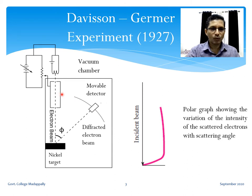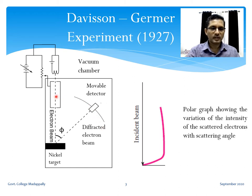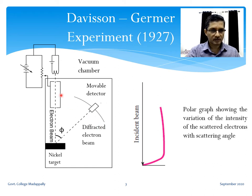When you move the detector, we can calculate φ, the angle between the incident electron beam and the scattered electron beam. When the electron detector is moved along this axis, we can calculate the number of electrons scattered at different angles — 10 degrees, 20 degrees, 30 degrees, etc.